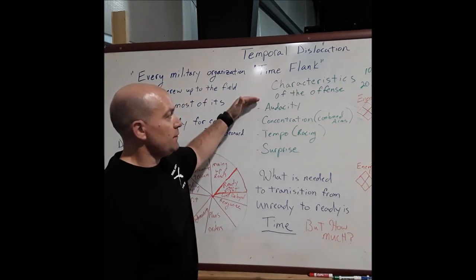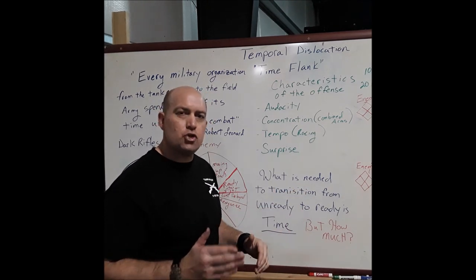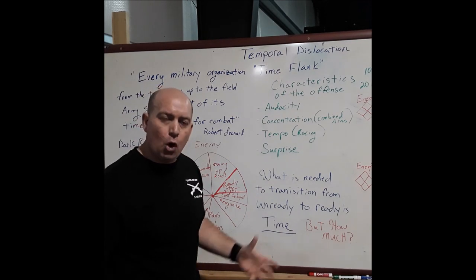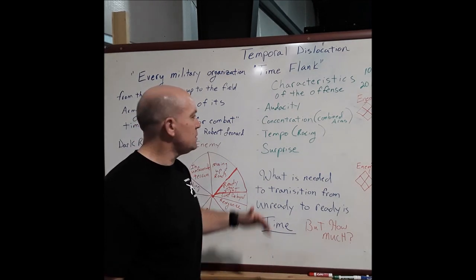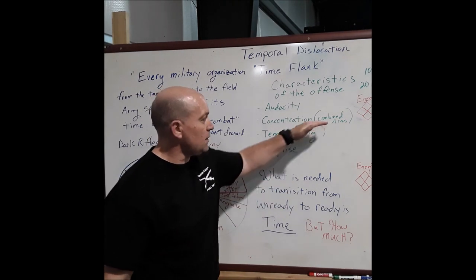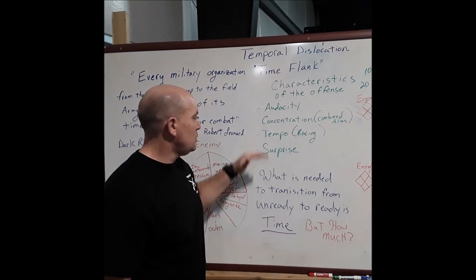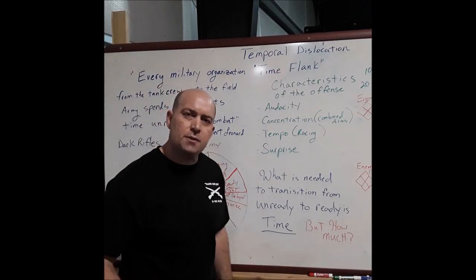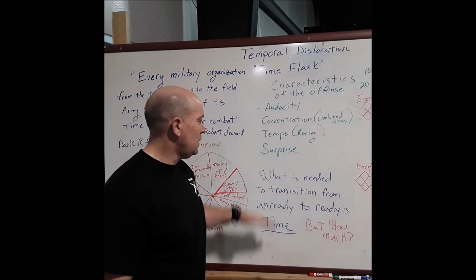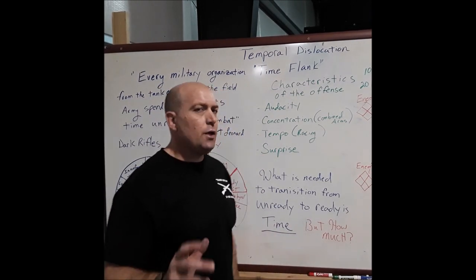The characteristics of the offense — or what the offense should look like — include audacity and boldness, aggressiveness, concentration of effects (which I like to think of as combined arms), and tempo, which for our battalion means racing and moving faster than your opponent. And you should have surprise. How do you achieve surprise? Through the manipulation of time.